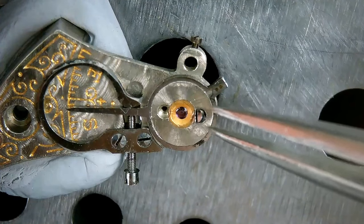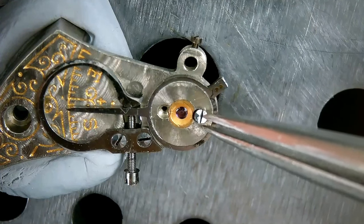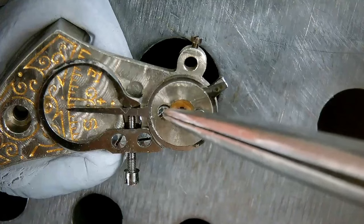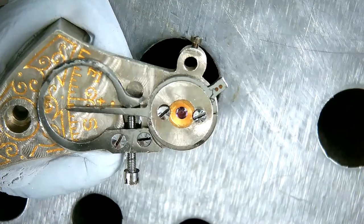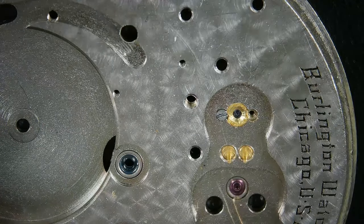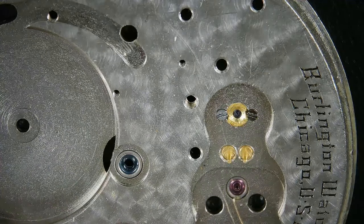So off camera, I've already removed the upper and lower balance jewels and cleaned them in alcohol. And here I'm just reinstalling the upper balance jewels. And now we can move on to the lower balance jewels.